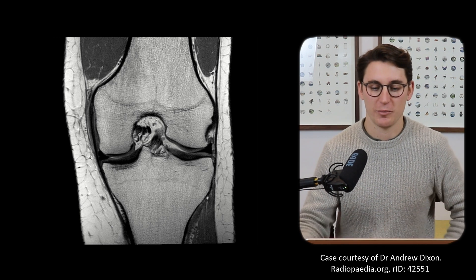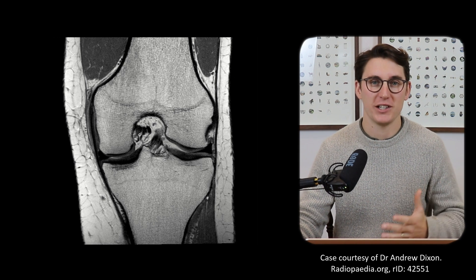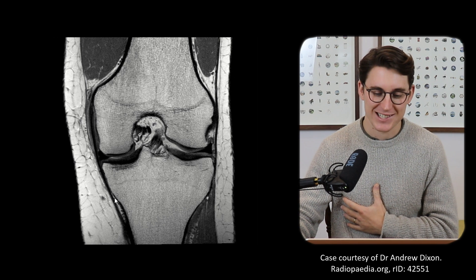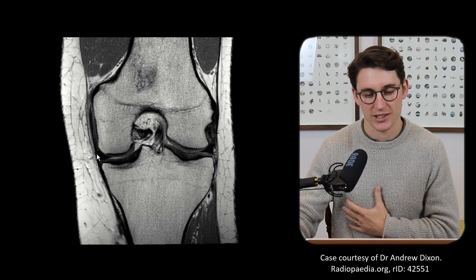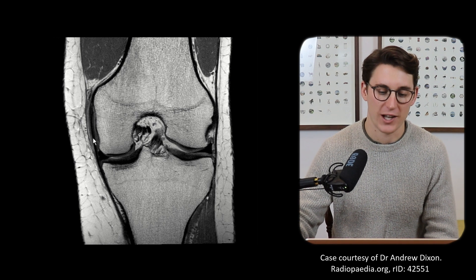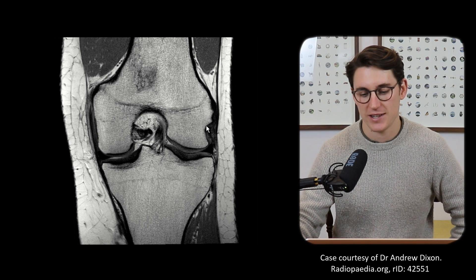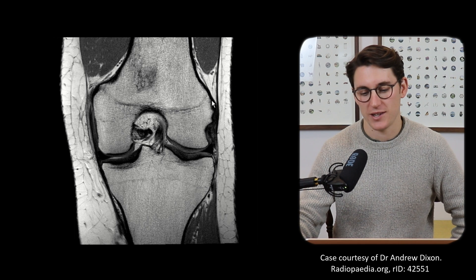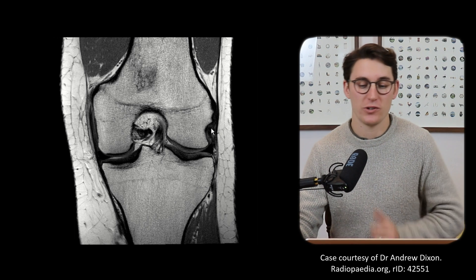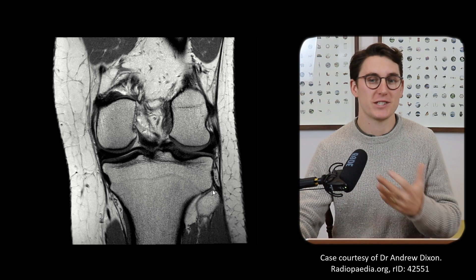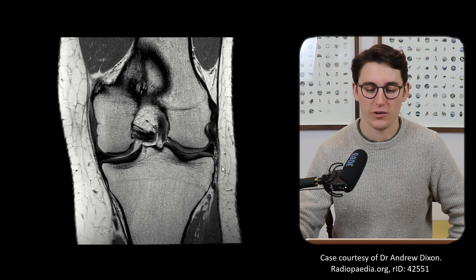Let's start by looking at this coronal PD image of the knee. The first thing we need to do is figure out which part of the image is medial and which is lateral. The first clue that this is medial is this thick, homogeneous low signal band coming down in close contact with the meniscus — this is the classic appearance of our medial collateral ligament. Scrolling slightly posterior, we can see almost the profile of a face — the classic appearance of the lateral posterior portion of our lateral femoral condyle. And when we see our fibula coming into the image, we can say confidently that this is the lateral portion.